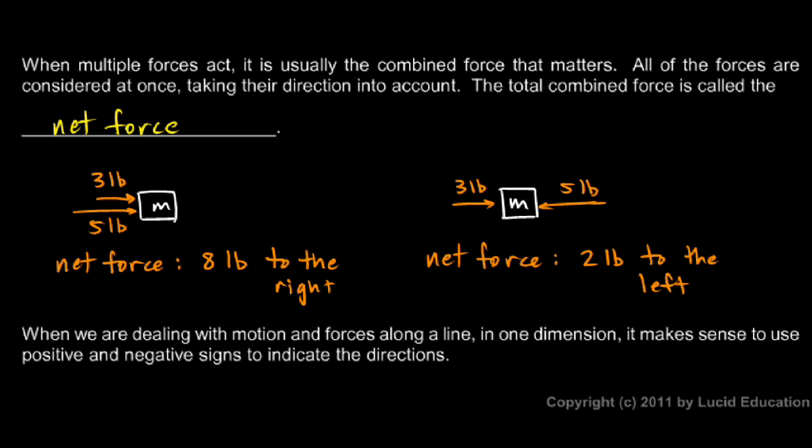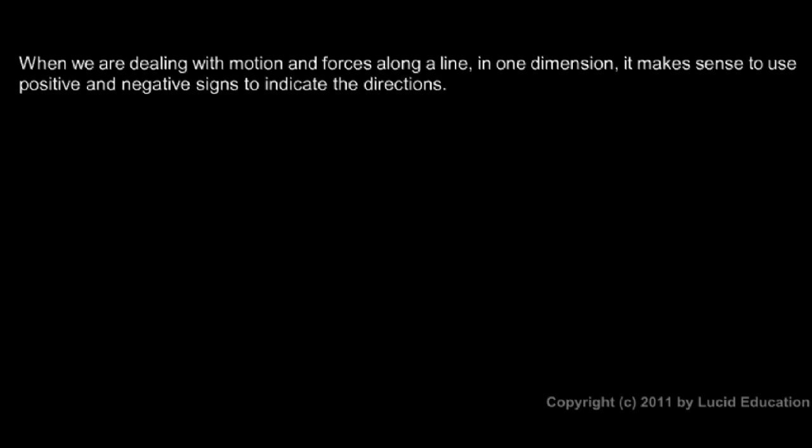Now one of the things we've been discussing in this course so far is motion in one dimension, basically motion along a line. And when you're dealing with motion along a line and forces along the line in one dimension, it makes sense to use positive and negative to indicate the direction. Just like we have a number line with positive over to the right and negative over to the left, we can use those positive and negative signs to indicate directions for our force.